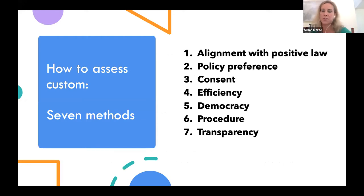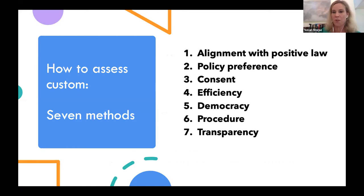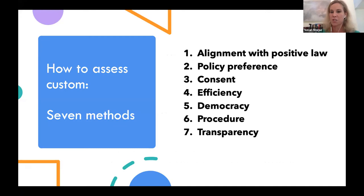Here are some ideas on how to assess custom — seven possible methods: alignment with positive law, policy preference, consent, efficiency, democracy, procedure, and transparency. I'll go through each of these in turn.